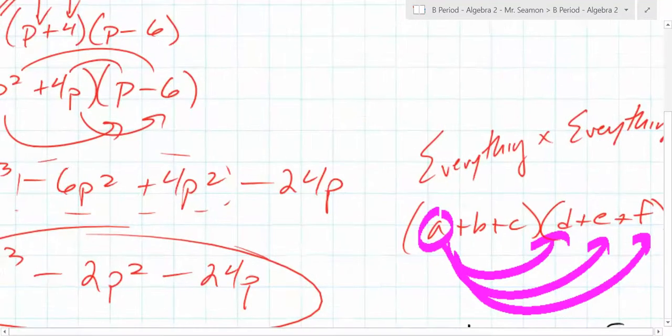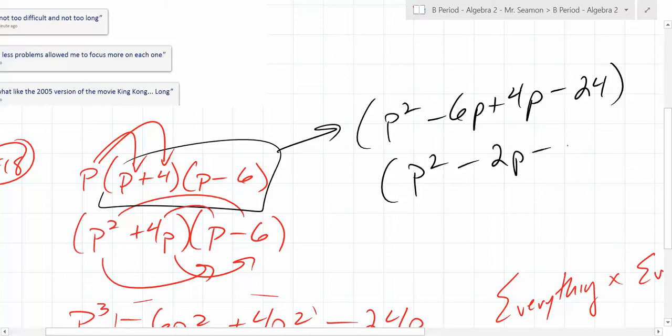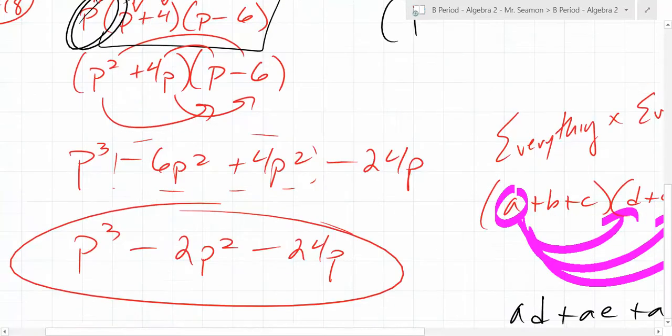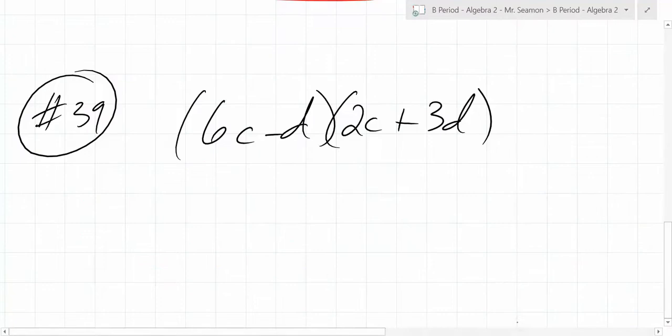You absolutely could. Sure. It should be the exact same answer. If you were to foil this first, you should get p squared minus 6p plus 4p minus 24, which simplifies to p squared minus 2p minus 24. But then what gets glued on the outside? The p, and that turns into p cubed minus 2p squared minus 24p. Either way. Multiplication, you can do it in any order, right? It's commutative. A times B times C is C times B times A is B times C times A. Okay, so remember, it's everything times everything.